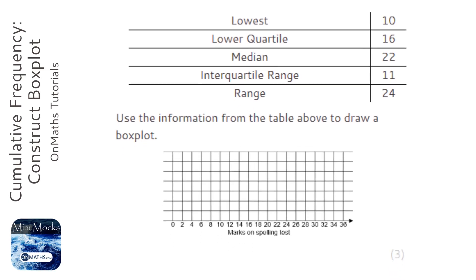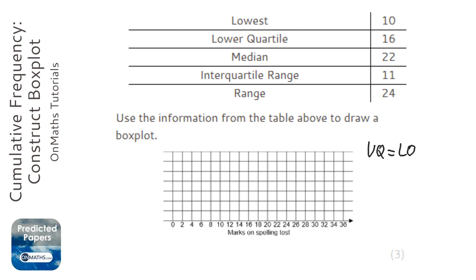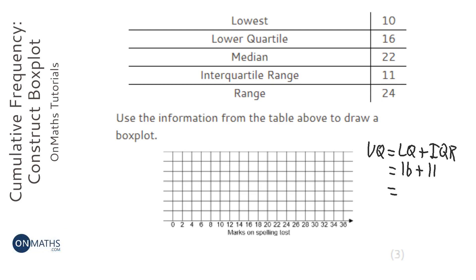The important thing to work out first is that we're not given the upper quartile or the highest value, so we need to work those out. To find the upper quartile, we take the lower quartile and add on the interquartile range. The lower quartile is 16 and the interquartile range is 11, so the upper quartile is 27.